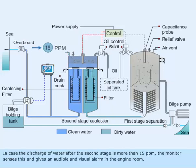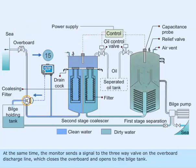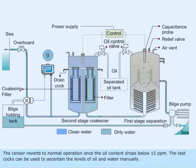The oil content of the final discharge is below 15 ppm. In case the discharge of water after the second stage is more than 15 ppm, the monitor senses this and gives an audible and visual alarm in the engine room. At the same time, the monitor sends a signal to the three-way valve on the overboard discharge line, which closes the overboard and opens to the bilge tank. The sensor reverts to normal operation once the oil content drops below 15 ppm.